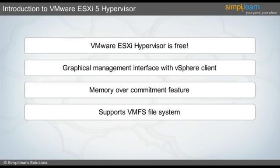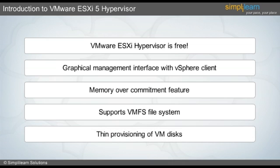VMware ESXi hypervisor supports thin provisioning of VM disks, which means storage resources can be over-allocated beyond the actual capacity of the physical storage. By allowing the over-subscription of capacity to the virtual machines, thin provisioning eliminates the need to dedicate full capacity up front.